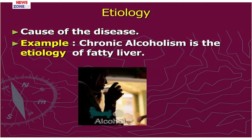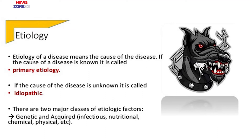The first step during study of disease is etiology, or cause of the disease. For example, a patient is suffering from fatty liver. After investigation, we found that the patient is a chronic alcoholic, so the etiology of the disease is chronic alcoholism. When the cause of the disease is known, we call it primary etiology. When the cause is unknown, it is known as an idiopathic disease. Etiological factors may be classified as genetic factors and acquired factors, such as infections, nutritional status, chemical agents, physical agents, etc.